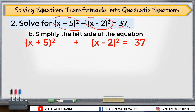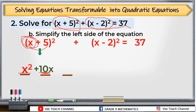We need to simplify this. The product of the square of a binomial is a trinomial composed of 3 terms. To get the first term, we square x — that gives x squared. For the middle term, we multiply x and 5, then multiply by 2: 5 times x is 5x, times 2 is 10x. For the third term, we square the second term: 5 squared is 25.